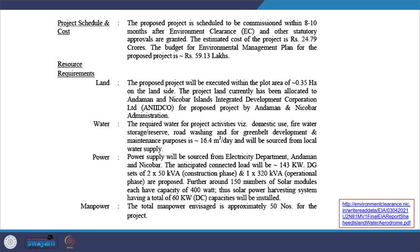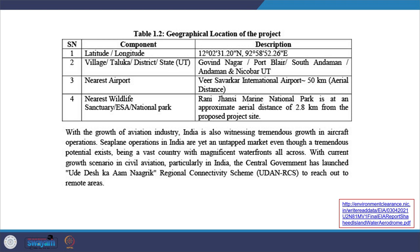The resources being used include: 0.35 hectares of land on the land side; water required for project activities including domestic use, fire water storage, road washing, and green belt development, channelized through local water supply; power sourced from the electrical department; and total manpower calculated to be 50 numbers for the project. Details of geographical locations are given as well.